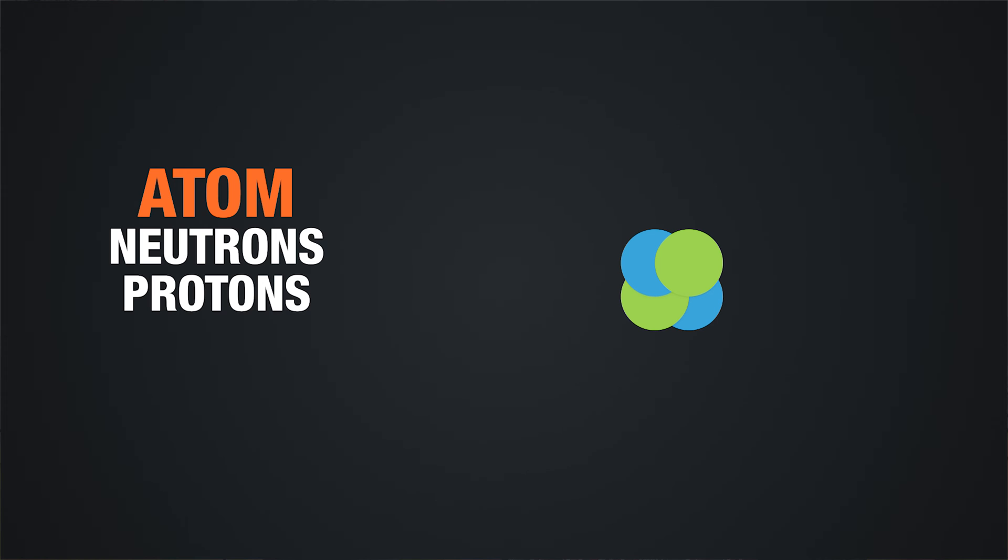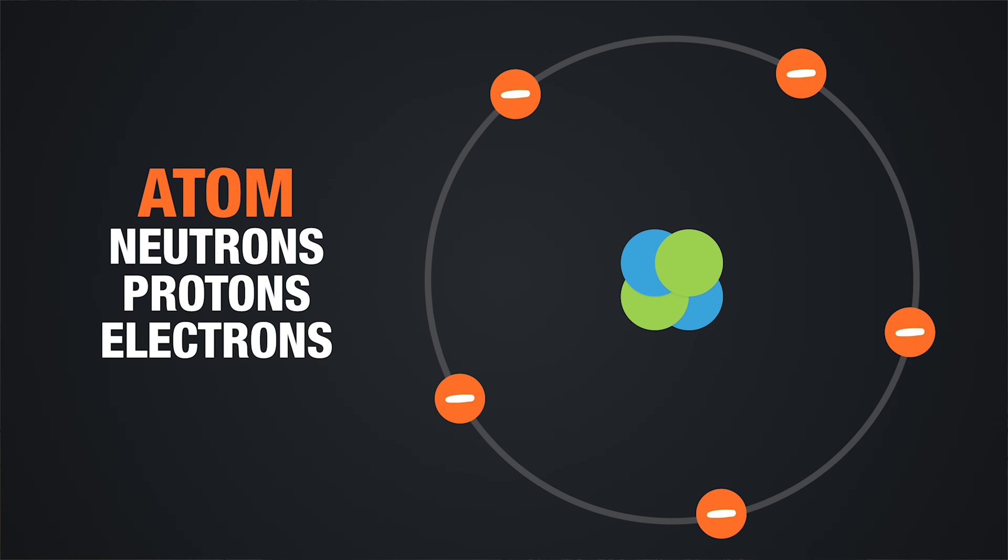If we recall some basic topics in chemistry, we'll remember that all atoms consist of neutrons, protons, and electrons, except for a normal hydrogen atom which doesn't have a neutron.